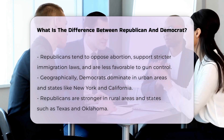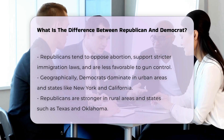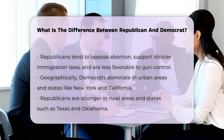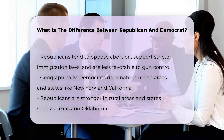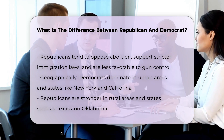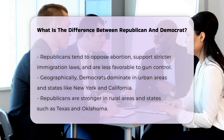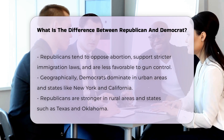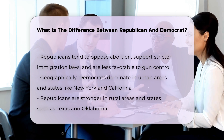Geographical strongholds. Democrats tend to dominate in large cities and states like New York, Massachusetts, and California. Republicans are stronger in rural areas and states such as Texas, Kansas, and Oklahoma.